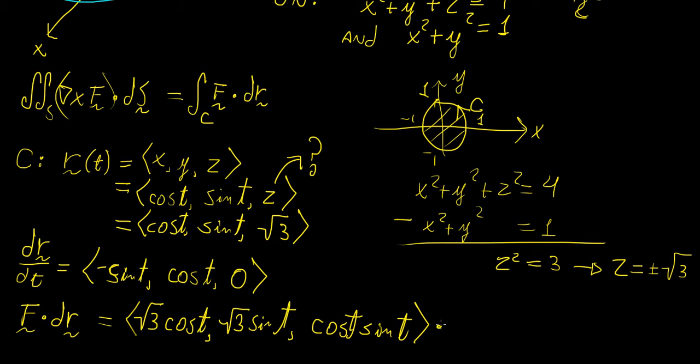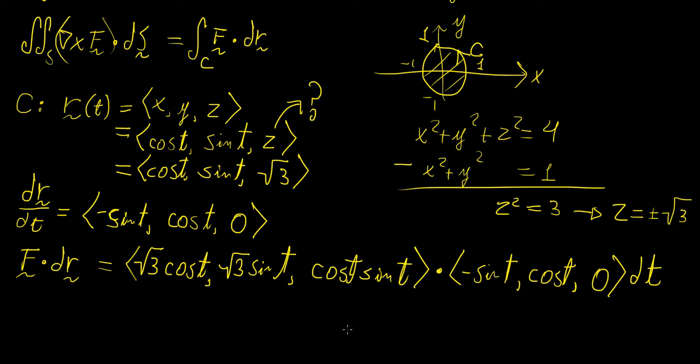And then this is going to be taking the dot product with respect to this quantity here, so that's going to be minus sine t, cosine of t, and then 0. And remember, we need to include the dt here, because that's the variable we're integrating with respect to.